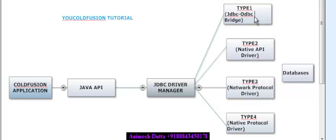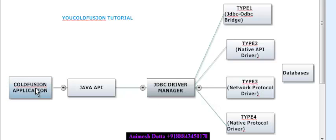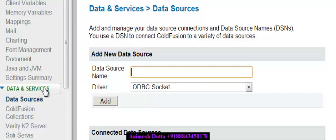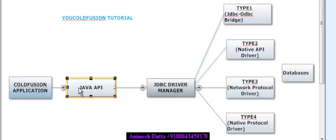Type 1 is JDBC-ODBC bridge, type 2 is native API driver, type 3 is network protocol driver, and type 4 is native protocol driver. From a ColdFusion application — a particular dot CFM page — you connect with a database like MySQL or SQL Server through Java API and JDBC driver manager. We are directly going to the data sources in ColdFusion Administrator and selecting a particular database, so we are manually avoiding these steps — it is done by ColdFusion automatically.